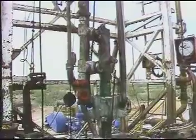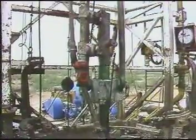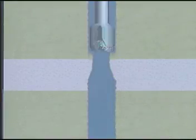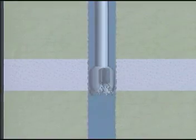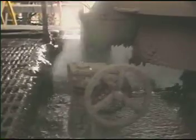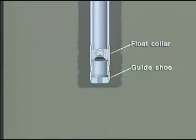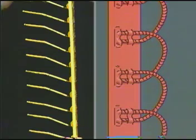A good cementing procedure will also provide the following directions. First, condition the hole by reaming out tight spots. Condition the mud to remove cuttings and maintain a low viscosity. Install a guide shoe and float collar to prevent over-displacement.